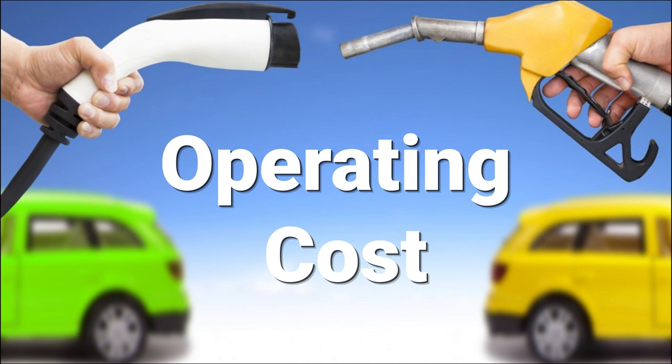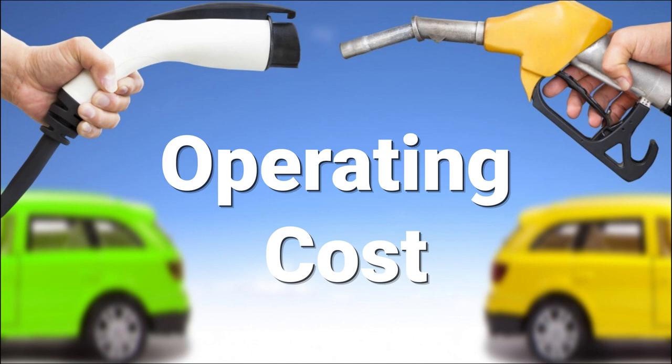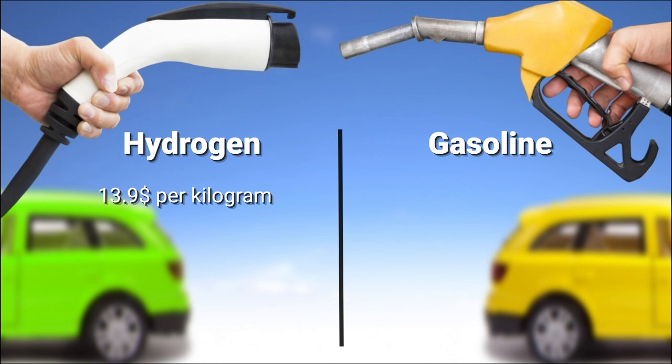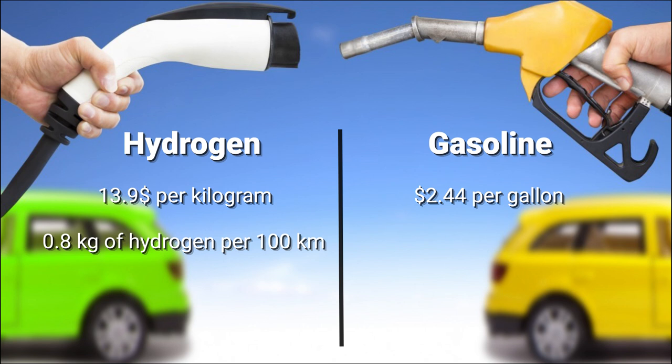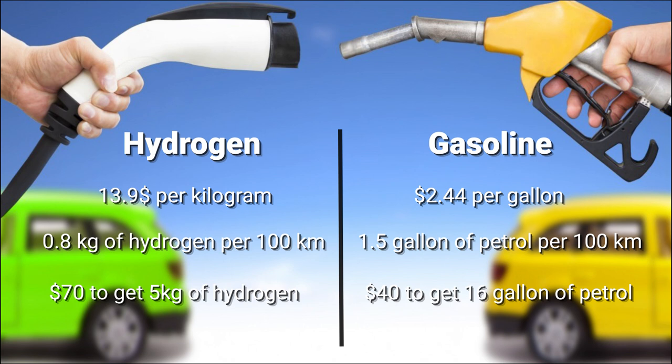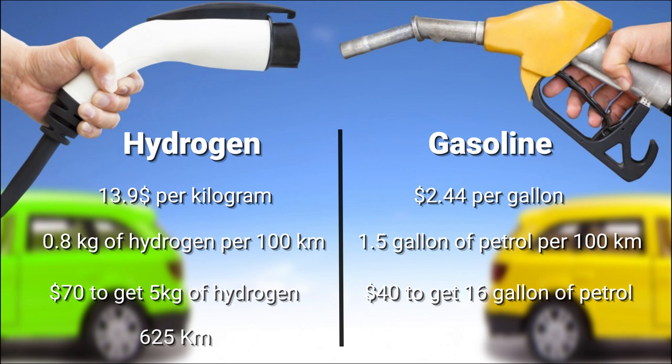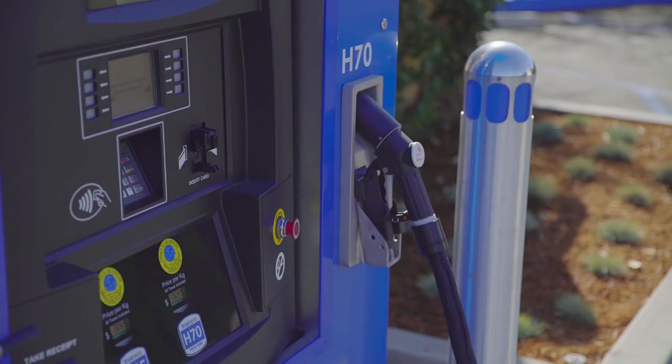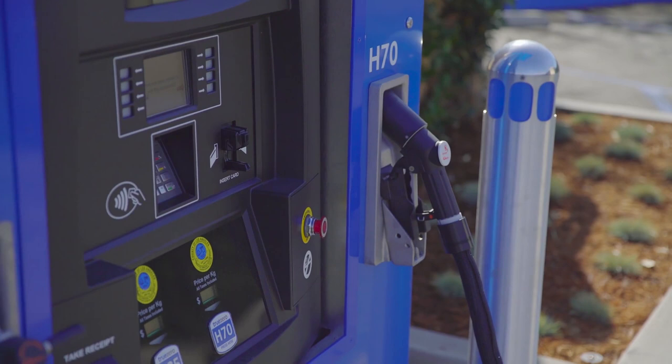Operating costs is yet another reason in slow mass adoption of these cars. On average, hydrogen fuel prices $13.9 per kilogram, while gasoline prices are around $2.44 per gallon. Hydrogen cars use an average of 0.8 kilograms of hydrogen per 100 kilometers, while petrol cars use around 1.5 gallons of petrol per 100 kilometers. So, if you spend $70 to get 5 kilograms of hydrogen, and $40 to get 16 gallons of petrol, a hydrogen car will only travel a distance of 625 kilometers, while a petrol-powered vehicle can go as far as 1,090 kilometers. That's a huge difference. However, NREL estimates that hydrogen fuel prices may fall to the $10 to $8 per kilogram range in the 2020 to 2025 period.